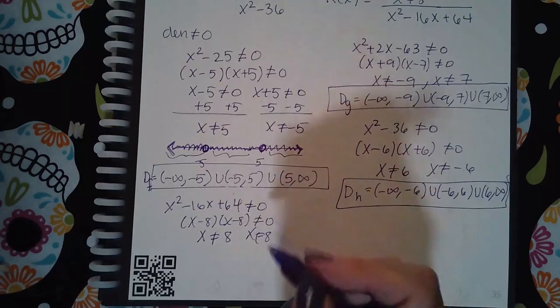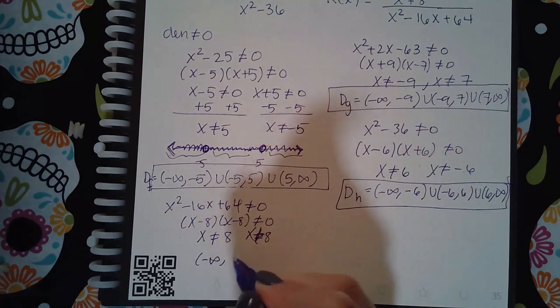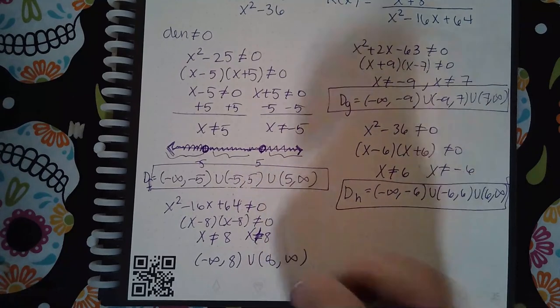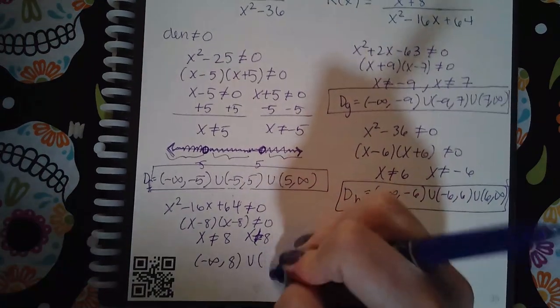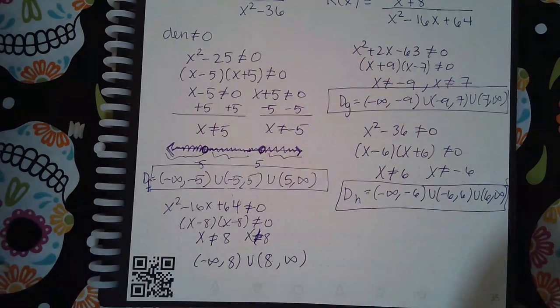So here there's only one hole, and it's at eight, which means my domain will be negative infinity to eight, and then from eight to positive infinity, because there's only one x value that I have to remove from the interval negative infinity to infinity.